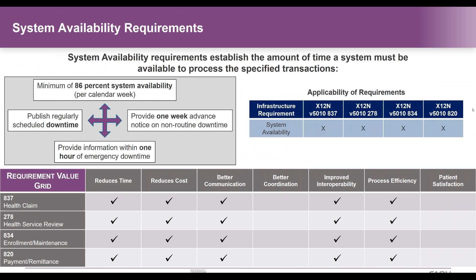We also have very specific requirements for system availability for all four transactions. This ensures that the system is up and available to receive transactions in real-time or batch at least 86% of the time per week. Entities must provide a one-week advance notice for any non-routine downtime, and a one-hour notice or explanation for any emergency downtime. This allows providers, clearinghouses, and software vendors to know that the system is down and can be resolved. It also allows for the requirement around regularly scheduled downtime, ensuring that the trading partner community is well aware of that particular downtime.